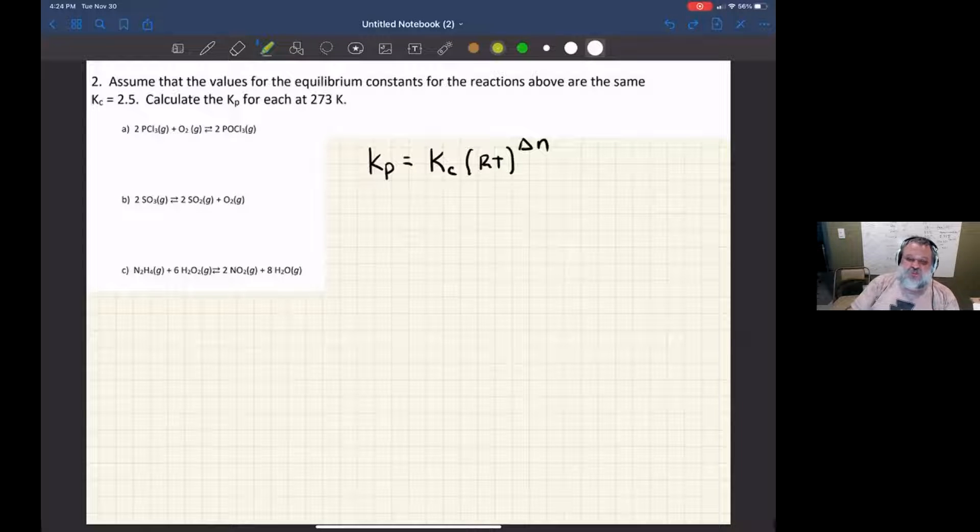And delta N is the change in the number of moles of gases. So number of moles of gas final minus number of moles of gas initial. In other words, number of moles of gas in the products minus the number of moles of gases in the reactants.